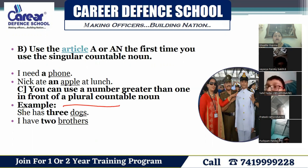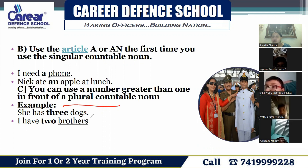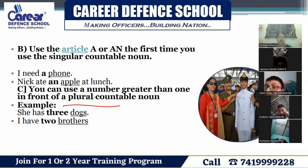Here are some examples with plural countable nouns: 'She has three dogs,' 'I have two brothers,' 'I have five pens,' 'six books,' like this.